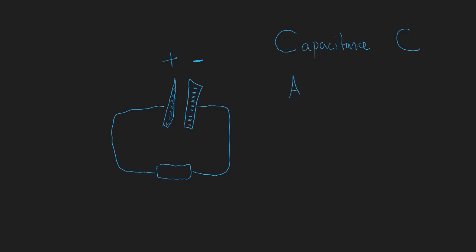The first factor is the area of the plates. As the area of the plates increases, capacitance also increases. So if we were to write a formula, capacitance equals — and we know that area is going to be one of our variables on top.